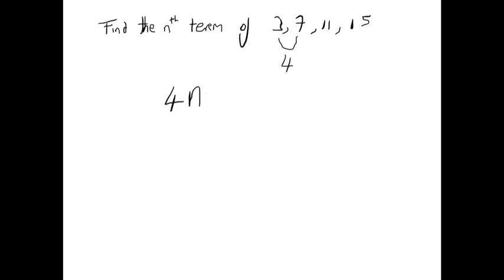You've got to ask yourself: what is the difference between 4, which is what we calculate when we put 1 in for n, and the first term here, which is 3? The difference is 1. So in order to get to 3, we have to subtract 1 from 4n. This gives us our nth term. So tn equals 4n minus 1, and 4n minus 1 is the formula. Let's see if that really works: if we put 1 in for n, we get 4 minus 1, which is 3. If we put 2 in, we get 8 minus 1, which gives us 7. 4 times 3 gives us 12, minus 1 gives us 11. So that formula seems to work pretty well.